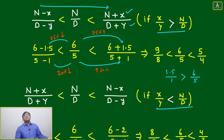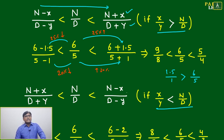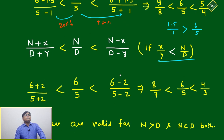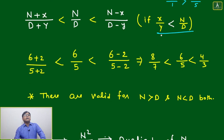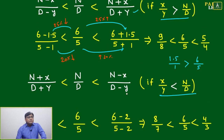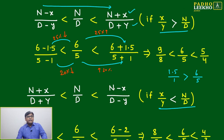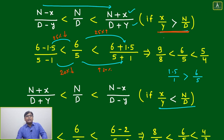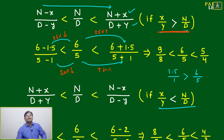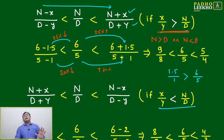This is the case when the numerator is greater than the denominator. If the numerator is less than the denominator, then the order will also be the same. If x/y is less than n/d, this is valid whether we take 6/5 or 5/6 — the condition is valid either way. Then the property (n+x)/(d+y) fits in the sequence, and this is valid whether n is greater than d or n is less than d.